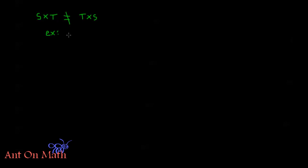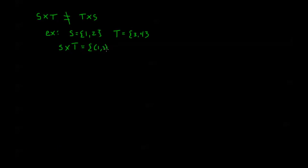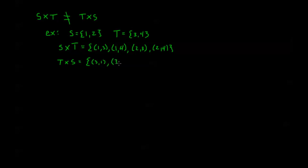I'll go ahead and show a little example of why. Let's say that S is the set {1, 2} and T is the set {3, 4}. Then S cross T is going to be {(1,3), (1,4), (2,3), (2,4)}, and T cross S is going to be {(3,1), (3,2), (4,1), (4,2)}.